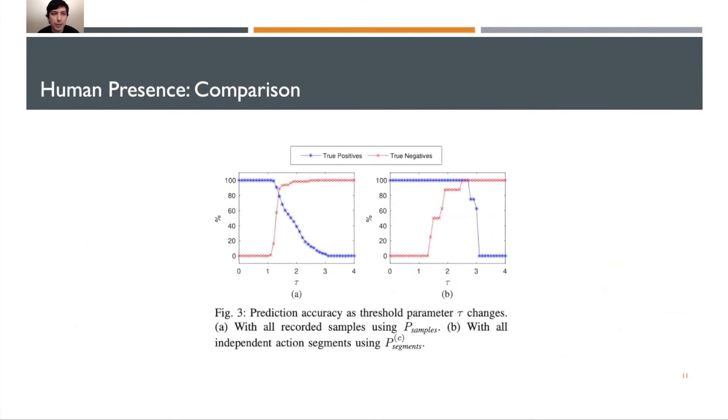Here's a comparison of the two methods side by side for PC samples on the left and PC segments on the right. What we can see here is that when we split by segments, we can actually increase the value of tau to better prevent any false positives from showing up. This helps us create a better and more robust system.